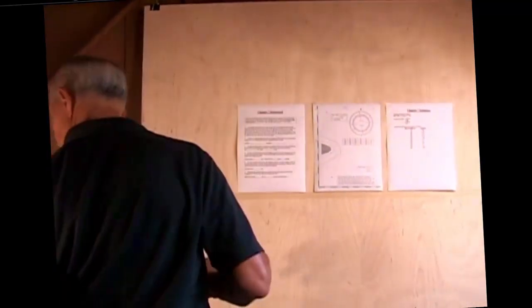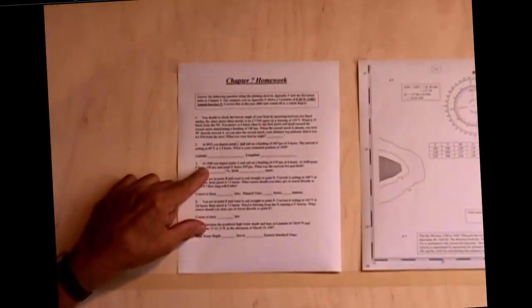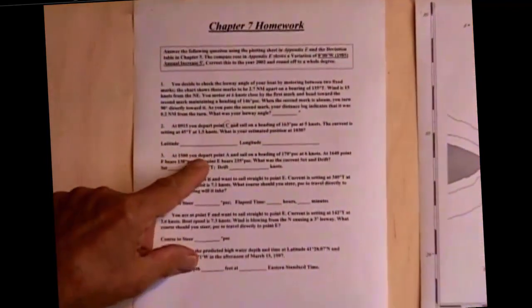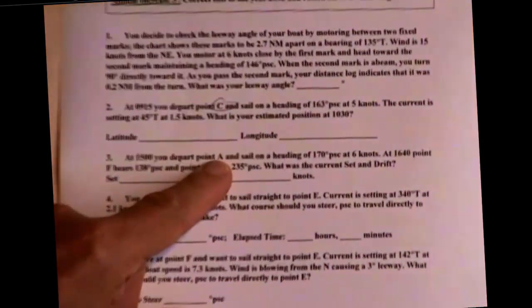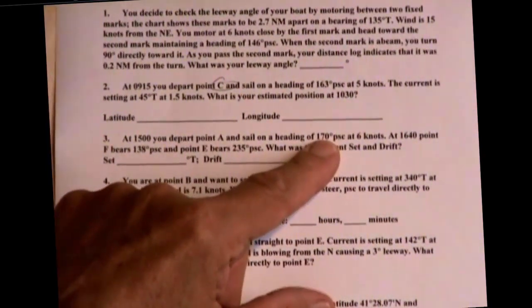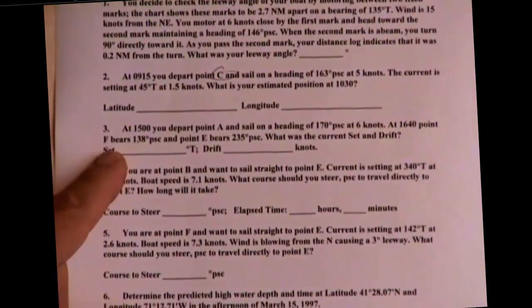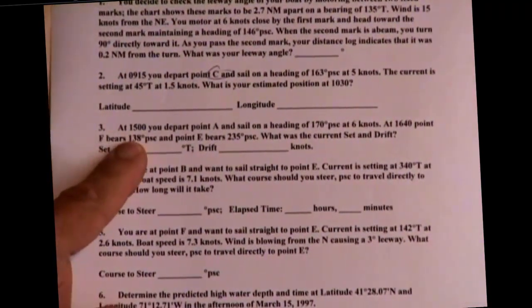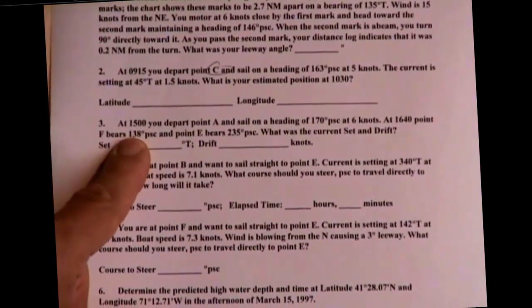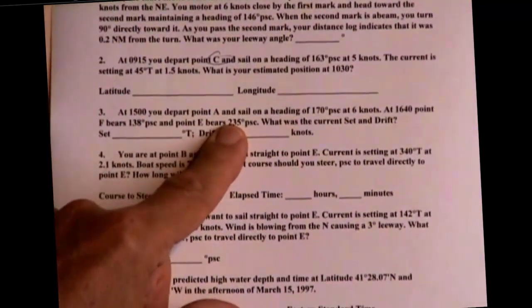Looking at question number 3, it says at 1500 you depart point A and sail on a heading of 170 PSC at 6 knots. At 1640, point F bears 138 PSC and point E bears 235 PSC.